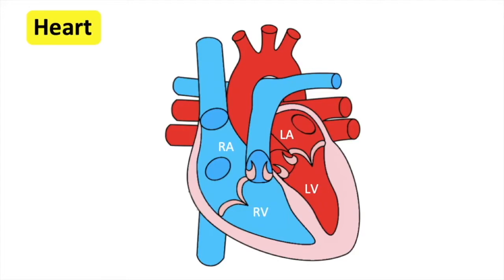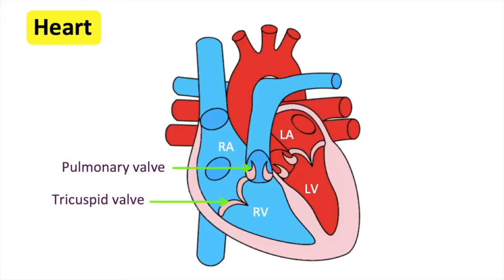The heart also has four valves. These are like little doors which only open one way. This ensures that the blood is flowing in the right direction and doesn't flow backwards. The tricuspid and pulmonary valves are on the right. The mitral and aortic valves are on the left.